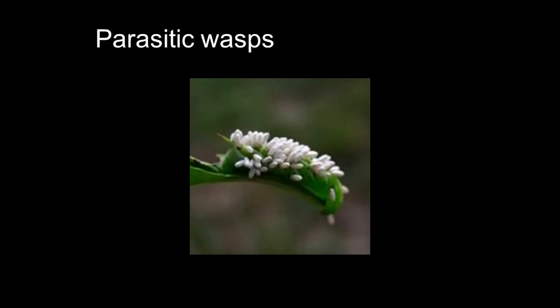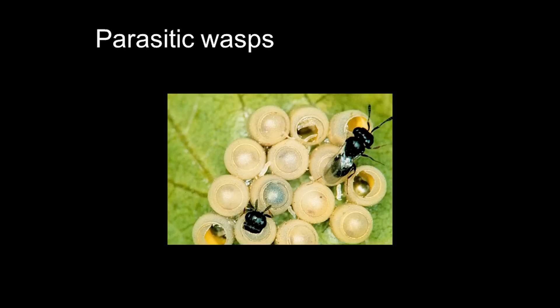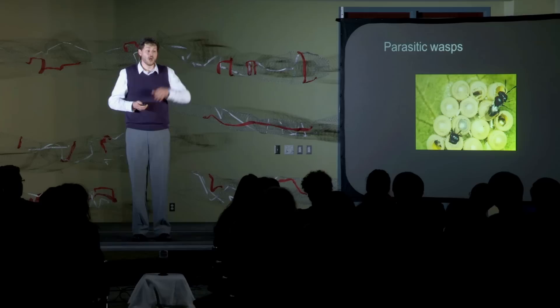Parasitoid diversity is huge. Here you see multiple parasitoids that have emerged and spun cocoons off this poor little caterpillar. And they range in size. This particular wasp is emerging out of a moth egg. These eggs are literally, the diameter of these eggs is about a millimeter across. This is a wasp. The adult is emerging out of a one millimeter diameter egg.